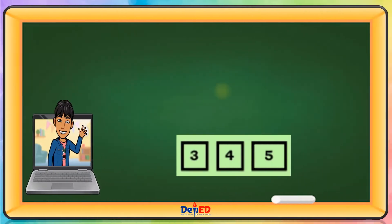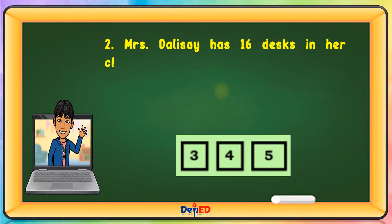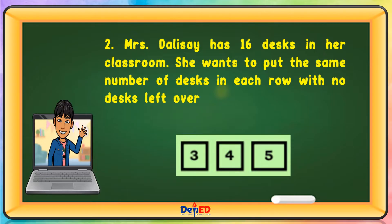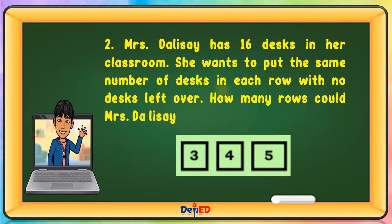Missy Tsai has 16 desks in her classroom. She wants to put the same number of desks in each row with no desk left over. How many rows could Mrs. Dalisai have? The answer is 4.